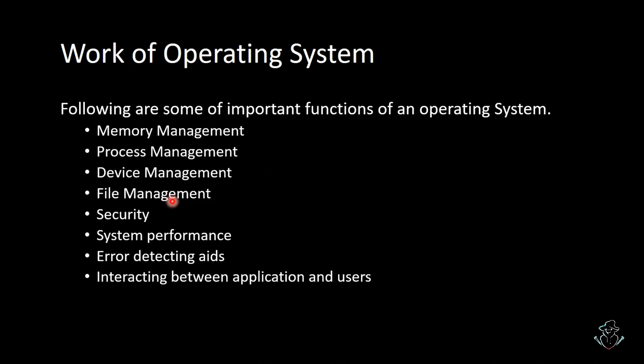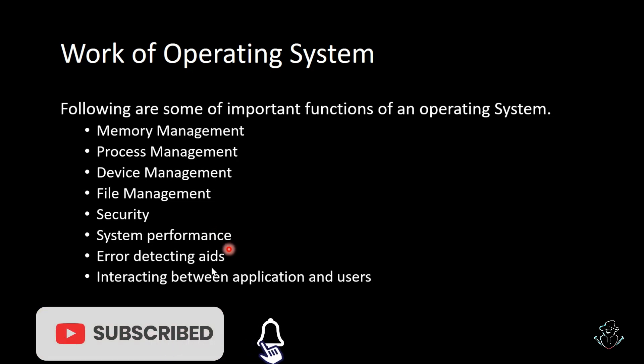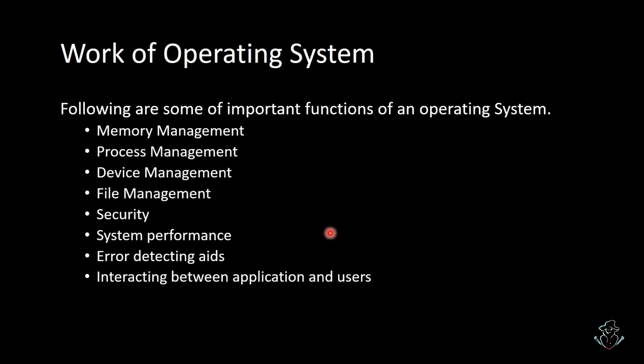Security is managed through tools like a firewall or Windows system security. System performance, error-detecting aids — all these are normal things every operating system has, along with interaction between the application and the user. Apart from these, there are many more tasks that an operating system performs.